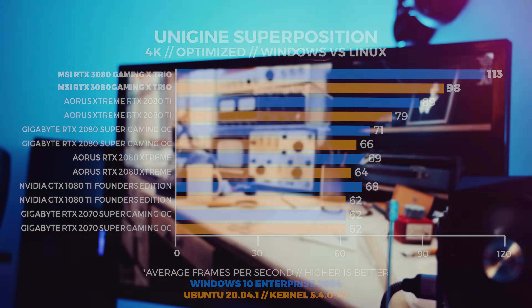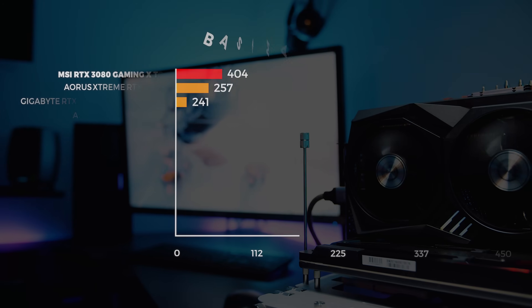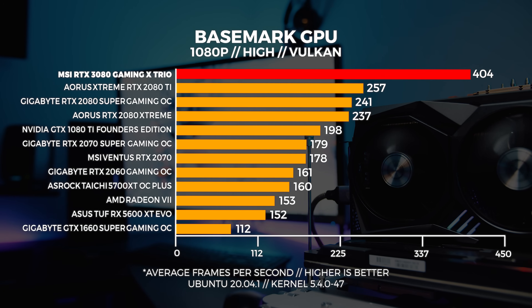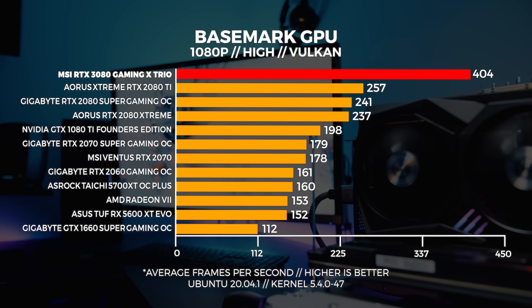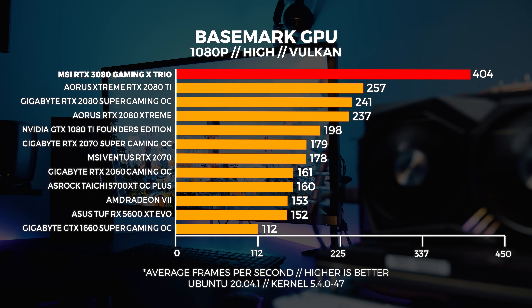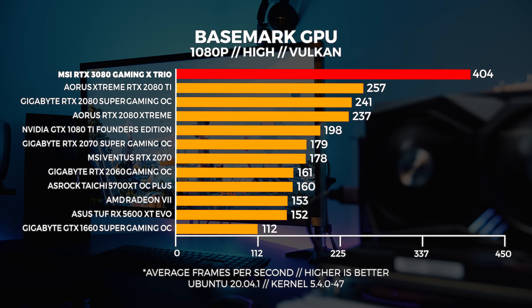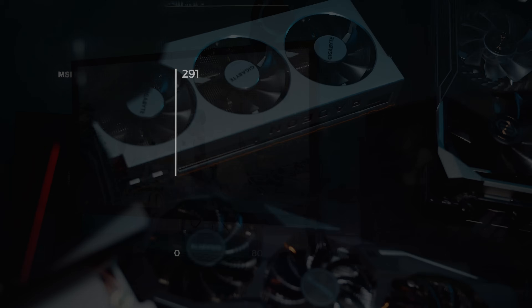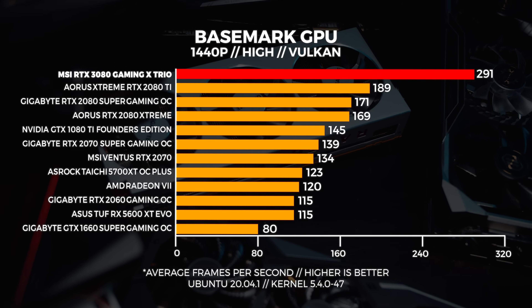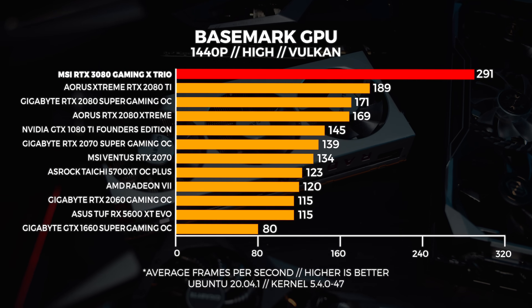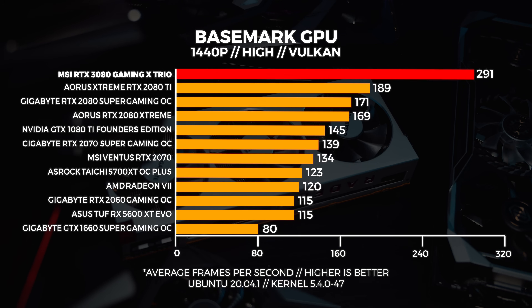Speaking of benchmarks, let's move on to the next one — Basemark GPU. Basemark gives us a great indication of Vulkan performance since the engine it's built on has been designed from the ground up with Vulkan in mind and it really takes advantage of your hardware. This benchmark is an all-out Vulkan benchmark but it uses your hardware in a bit of a different way. The 1080p results are like Windows and are very impressive, and this card really pulls away from the rest of the pack in terms of performance.